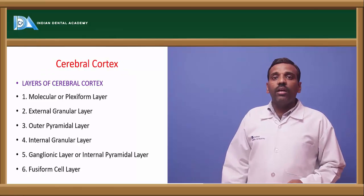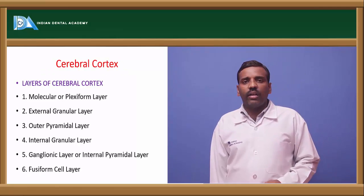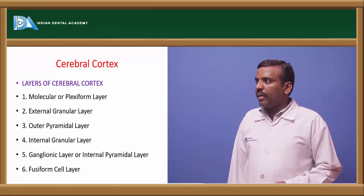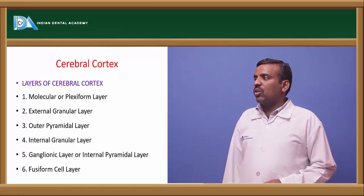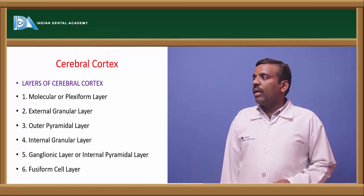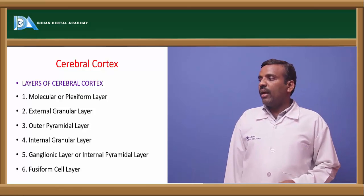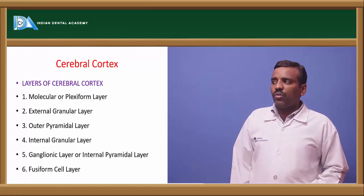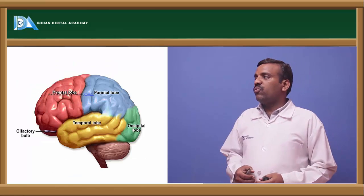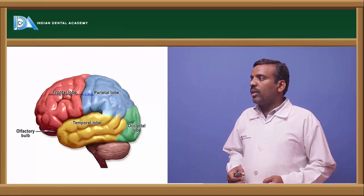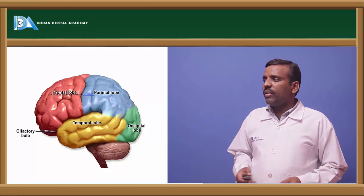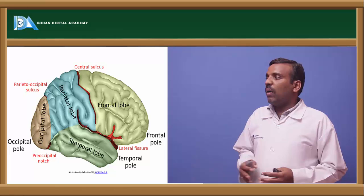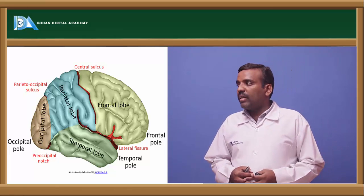The cerebral cortex has six layers: molecular or plexiform layer, external granular layer, outer pyramidal layer, internal granular layer, ganglionic layer, and fusiform cell layer. The cerebral cortex contains four lobes: frontal lobe, parietal lobe, temporal lobe, and occipital lobe, plus the olfactory area.